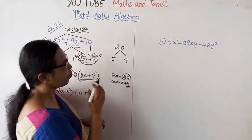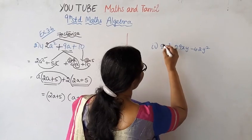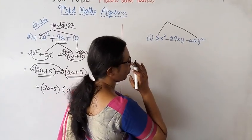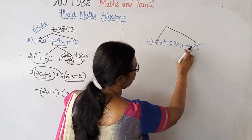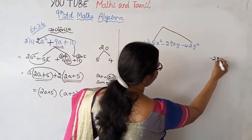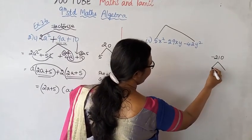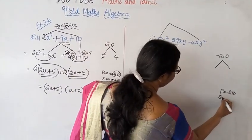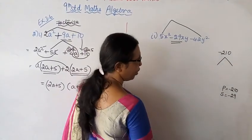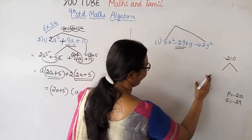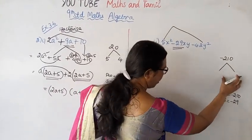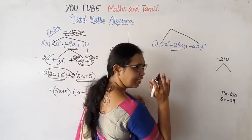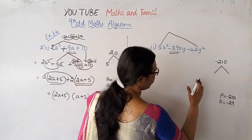Now the second subdivision: five into minus x squared. Look at the numbers — five into minus 42 equals minus 210. The product is minus 210. Now we need to find two numbers whose product is minus 210 and whose sum gives the middle coefficient minus 29.